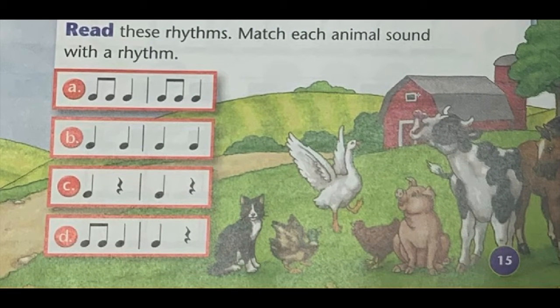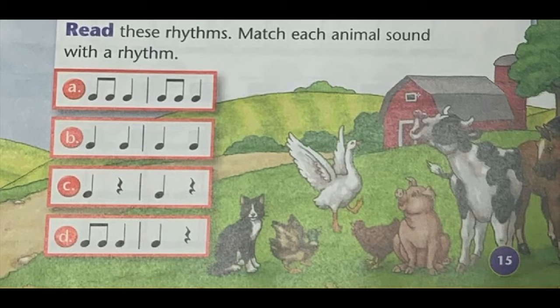Here we have the animal sounds written out as rhythms from our song. Let's take a look at A because it has nothing new — just ti-ti and ta. So A goes ti-ti-ta, ti-ti-ta. Try it with me, ready, go: ti-ti-ta, ti-ti-ta. Great.